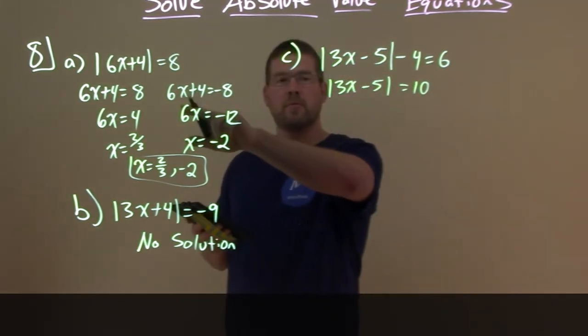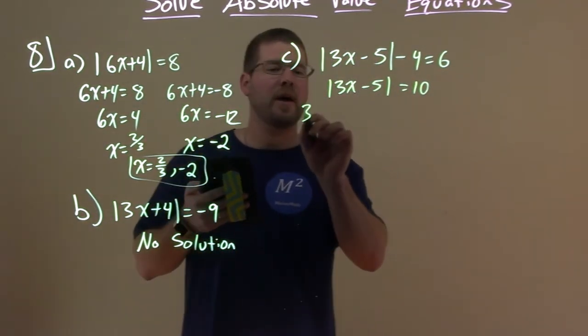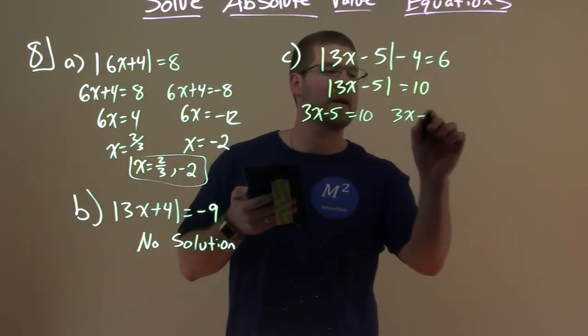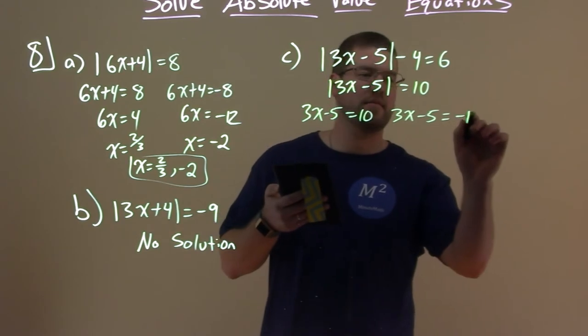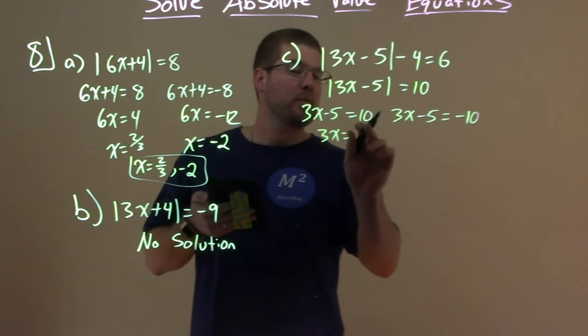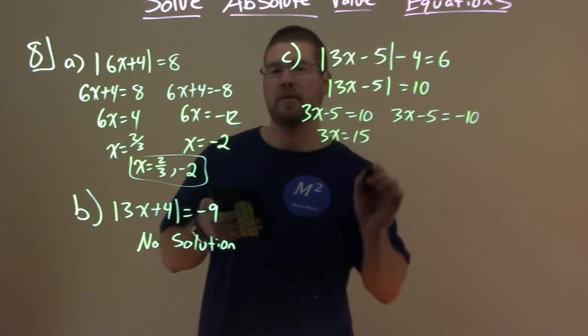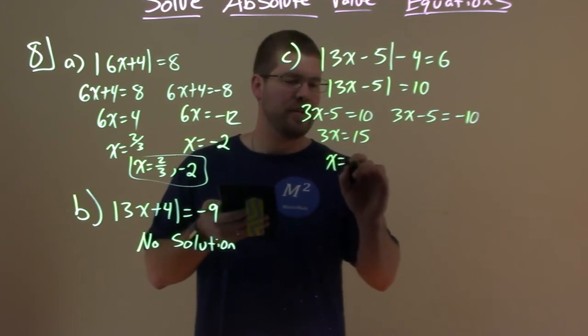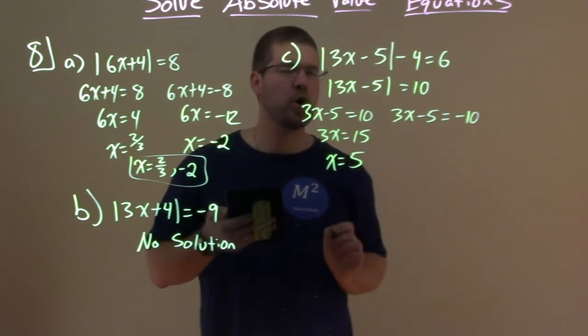And then now, just like we did before, we set this 3x minus 5 equal to a positive 10, and 3x minus 5 equal to a negative 10. And we got to solve both of them. Add 5 to both sides. 3x equals 10 plus 5, that's 15. Divide both sides by 3. Don't forget that. And 15 divided by 3 is 5.